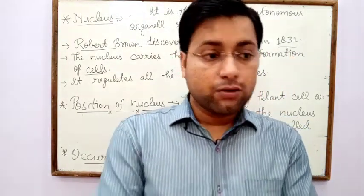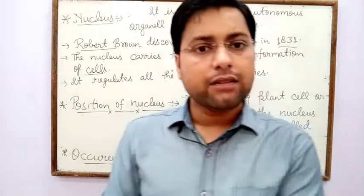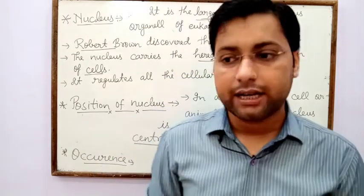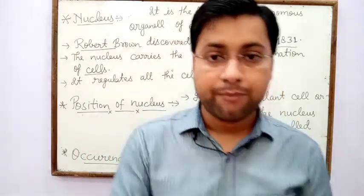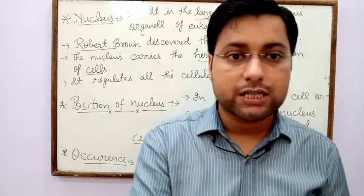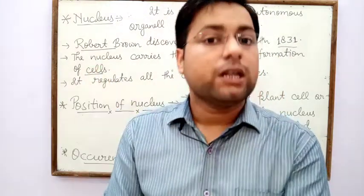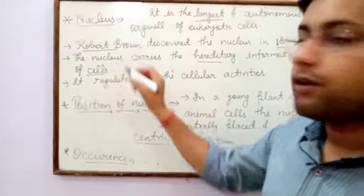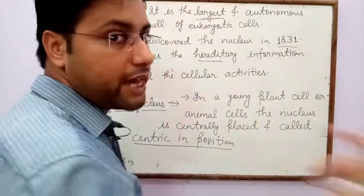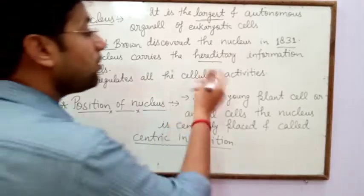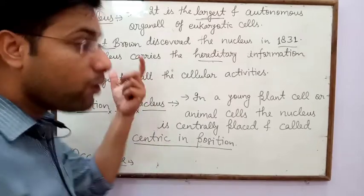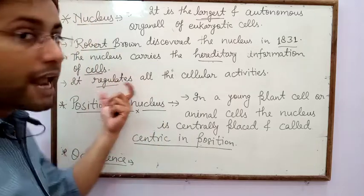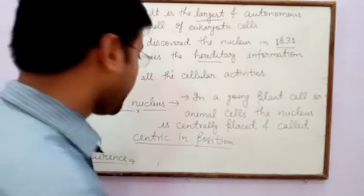The nucleus contains both DNA as well as RNA. DNA and RNA are both nucleic acids. DNA is responsible for the transmission of parental characters to offspring, because in DNA, genes are present and genes contain the hereditary information. Thus, the nucleus with the help of DNA carries hereditary information from one generation to the next. The nucleus also regulates all the cellular activities — it is like the pillar of the cell.